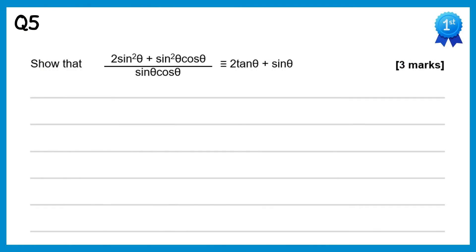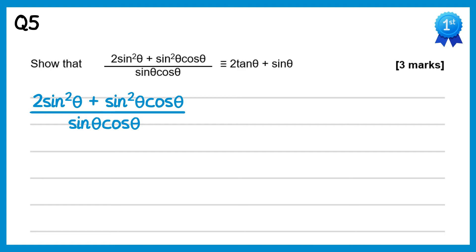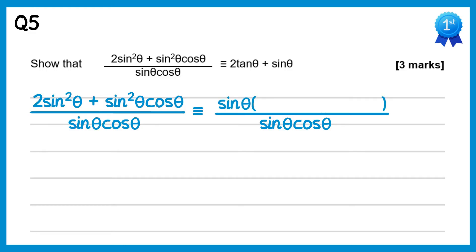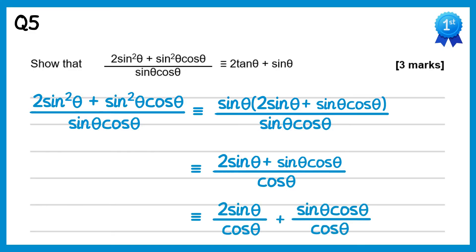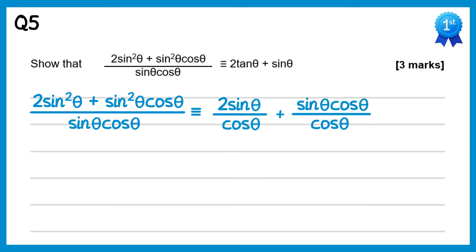For this question we're going to factorise sinθ from the numerator, keeping the denominator the same. Inside the bracket we have sinθ(2sinθ + sinθ·cosθ). The sinθ outside cancels with the sinθ denominator, leaving 2sinθ + sinθ·cosθ over cosθ. Separating into two fractions: 2sinθ over cosθ plus sinθ·cosθ over cosθ. The left fraction is 2tanθ, and on the right the two cosθ's cancel, just giving sinθ — which is what we wanted to show.